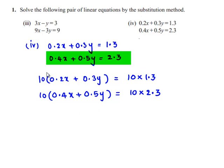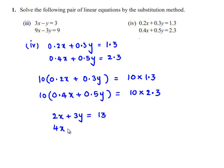Therefore, we will be getting 2x + 3y = 13 and 4x + 5y = 23. Let this be equation number 1 and this be equation number 2.